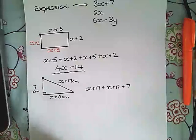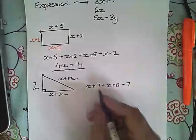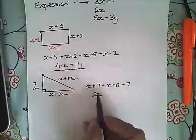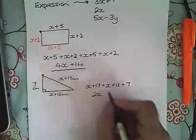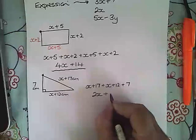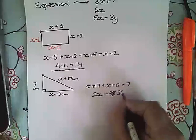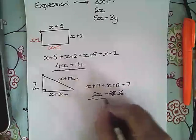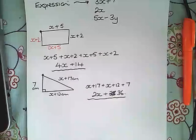Then tidy it up by collecting the things together that can be collected together. So the x plus the x is 2x. 17 plus 12 is 29, plus 7 is 36. So our expression here for the perimeter of this triangle is 2x plus 36.